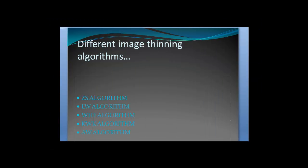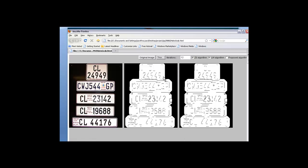There were many other algorithms for thinning used before, like the ZS algorithm, LW algorithm, WHF, KWK, and AW algorithms. Let us see two of the previously proposed algorithms, the ZS and LW algorithms. As we can see after thinning, the numbers are not clear in either case.